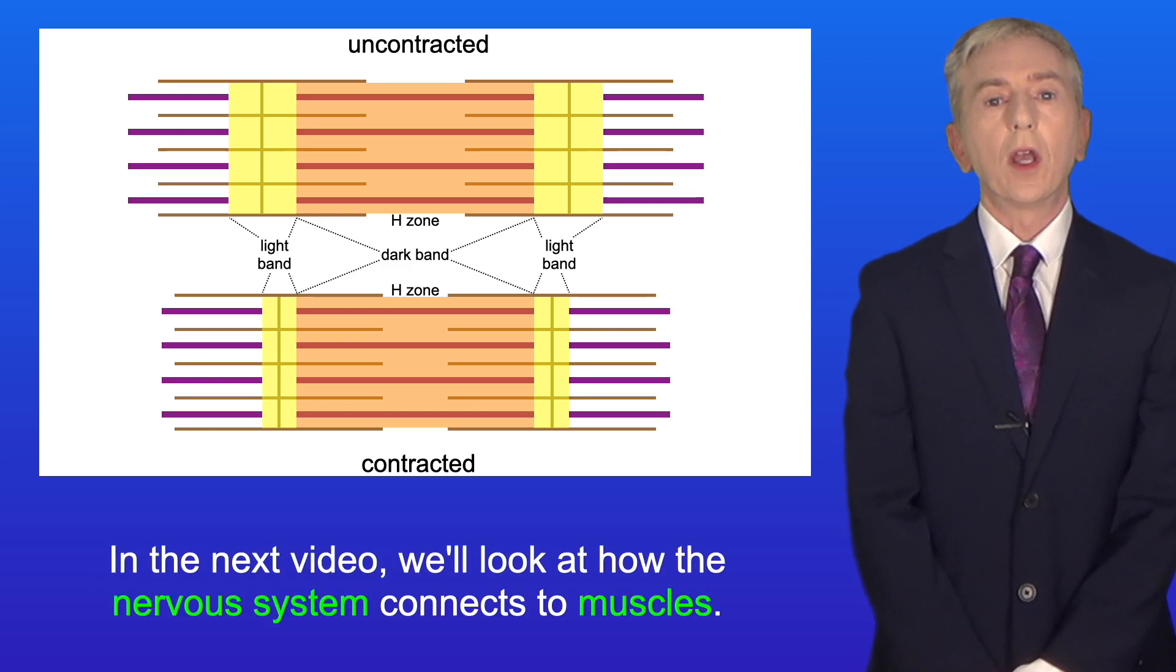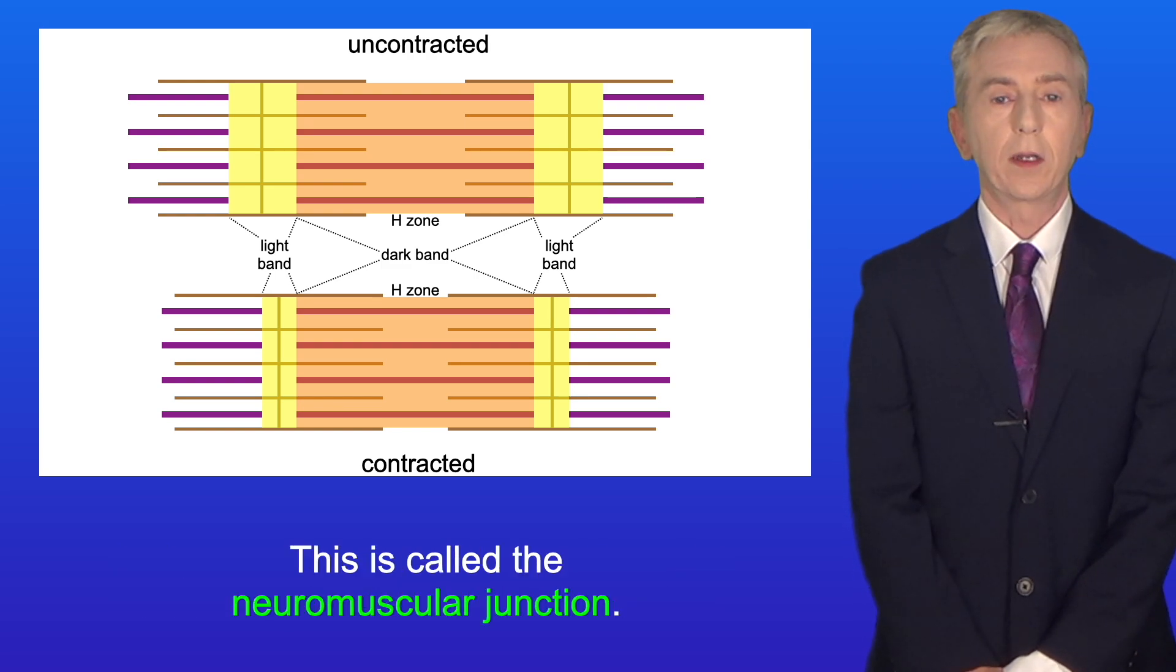In the next video we look at how the nervous system connects to muscles. This is called the neuromuscular junction.